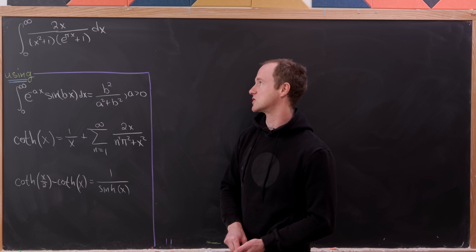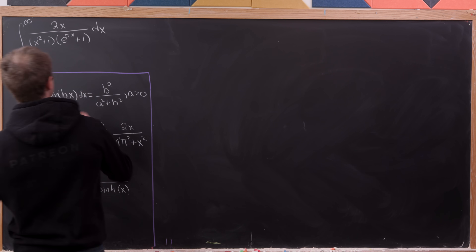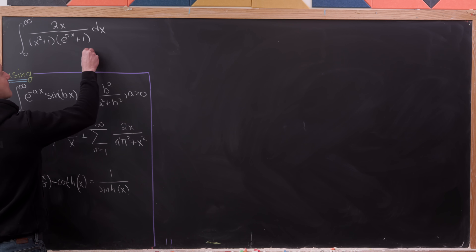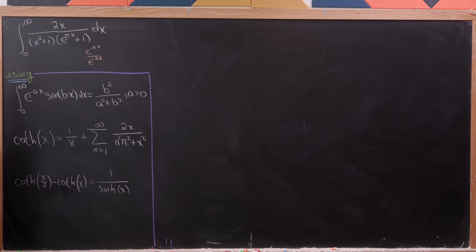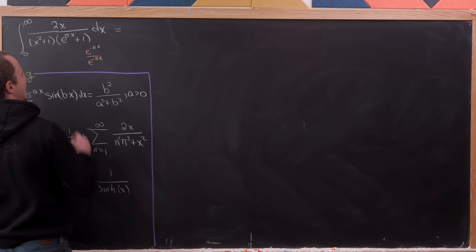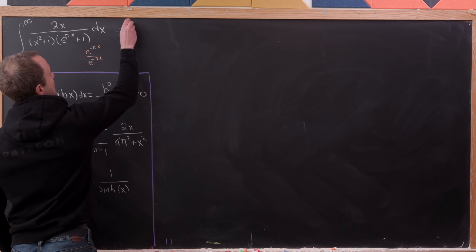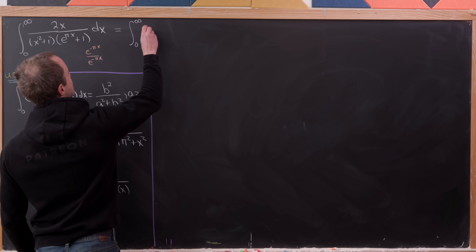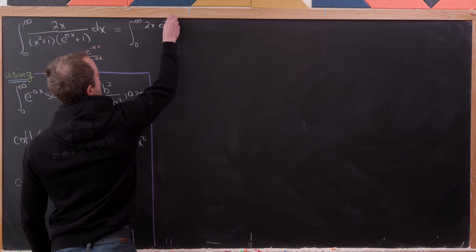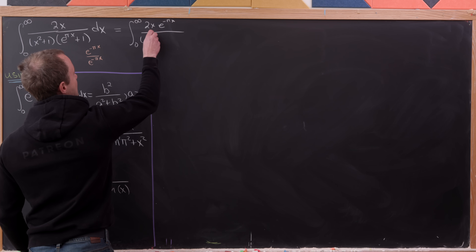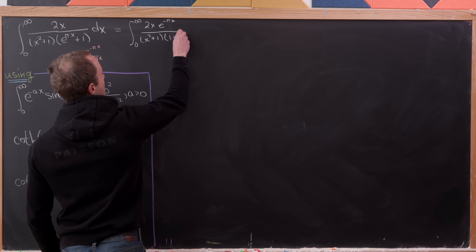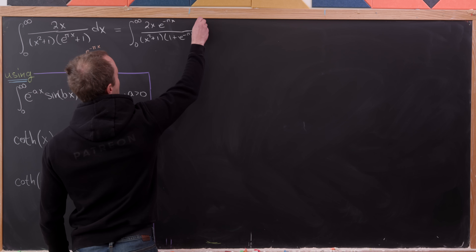To get started, we multiply the numerator and denominator by e^{−πx}, putting everything in terms of e^{−πx} instead of e^{πx}, which has a better limit on [0, ∞). This gives the integral from 0 to infinity of 2x·e^{−πx} over (x² + 1)(1 + e^{−πx}) dx.